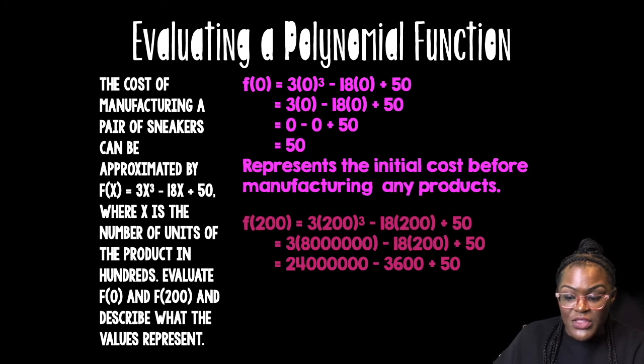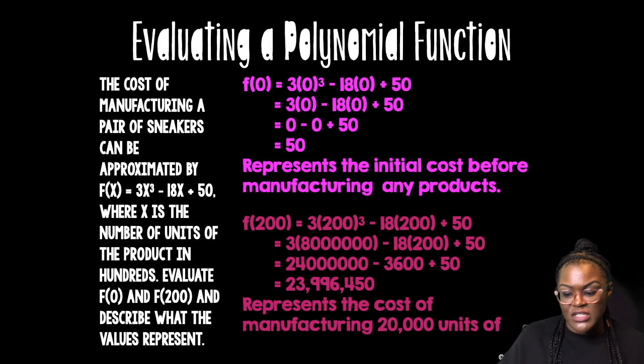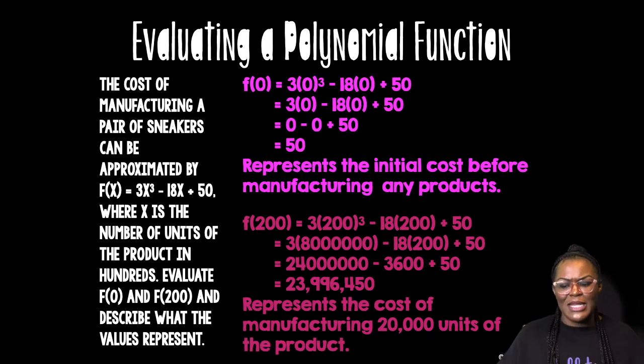So I'm not going to do negative 3600 plus 50 first. No. You do another thing first. And that's going to be my final answer. So that means this represents the cost of 20,000 units of this product.